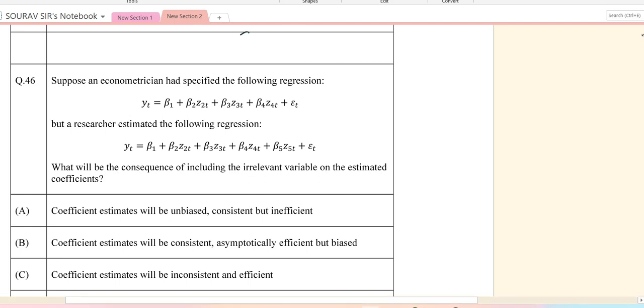Here we have an economics paper question. Suppose an econometrician has specified the following regression: yt = β₁ + β₂x₂t + β₃x₃t + εt, where epsilon is the error term. But the researcher estimated the following regression adding one more variable.